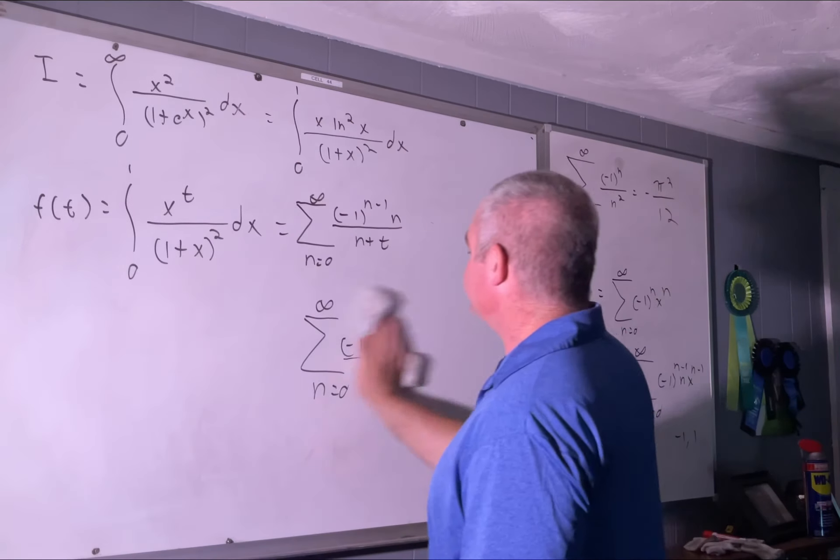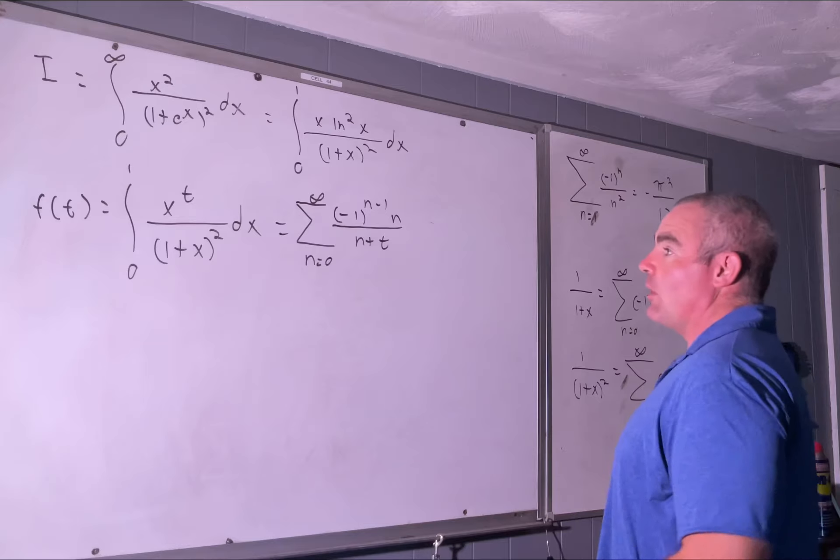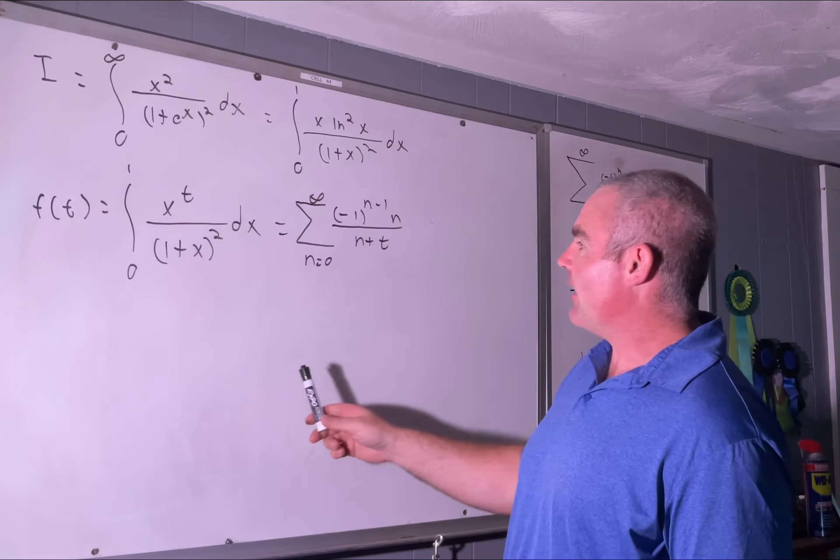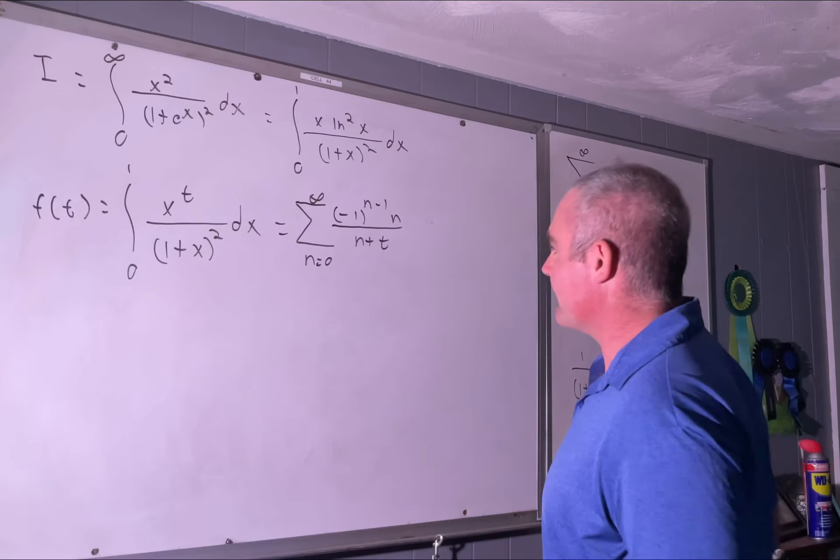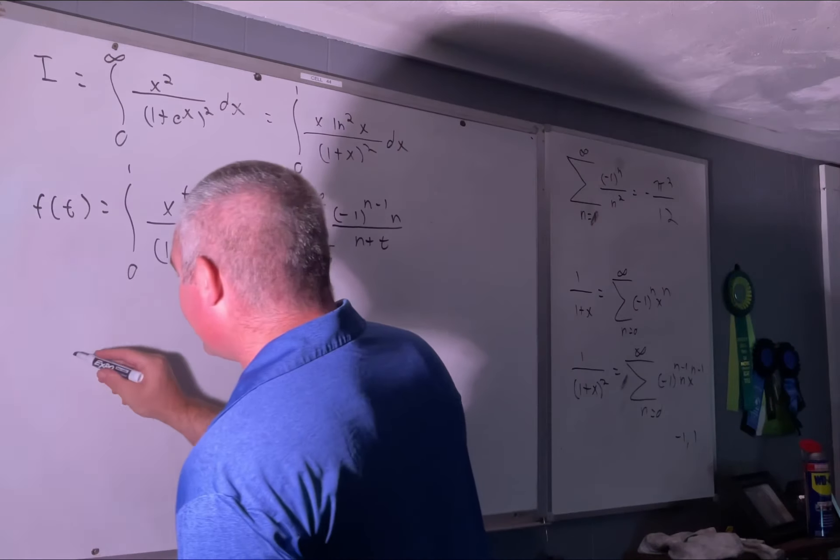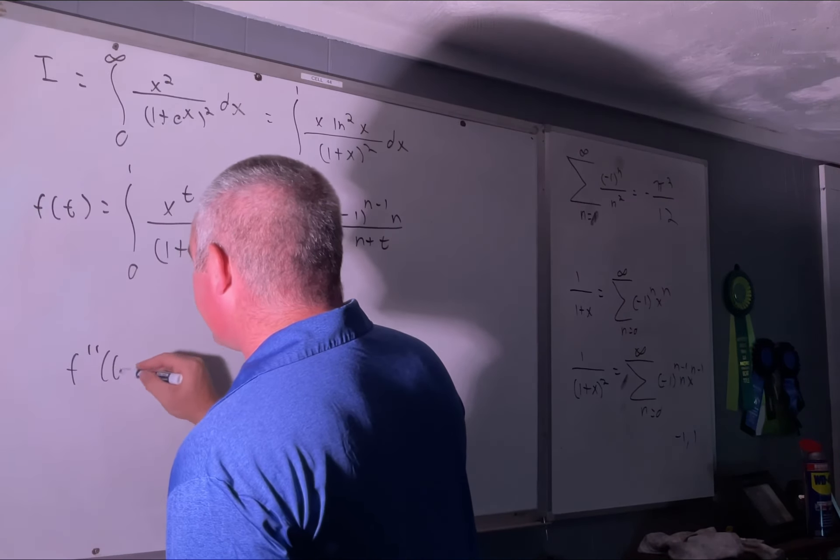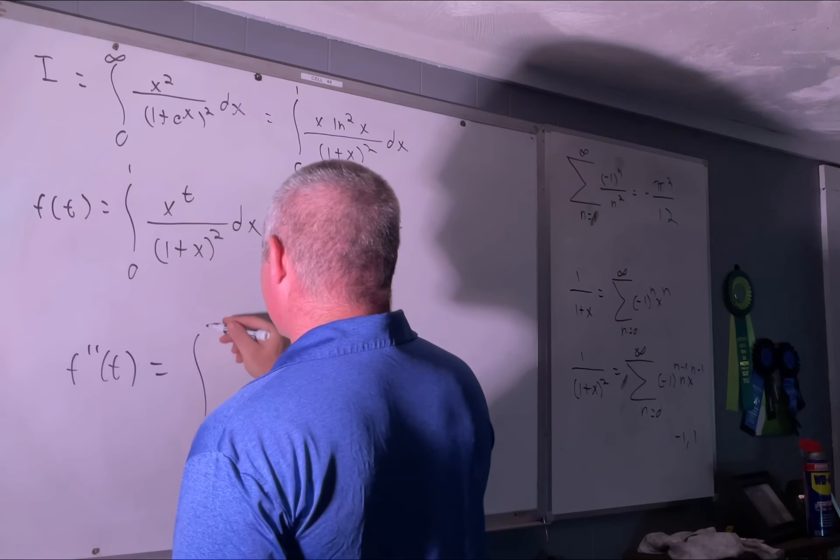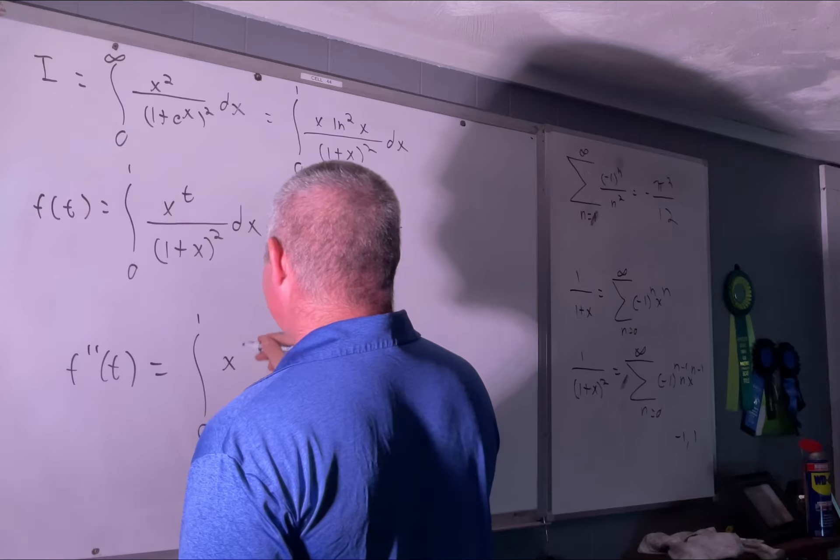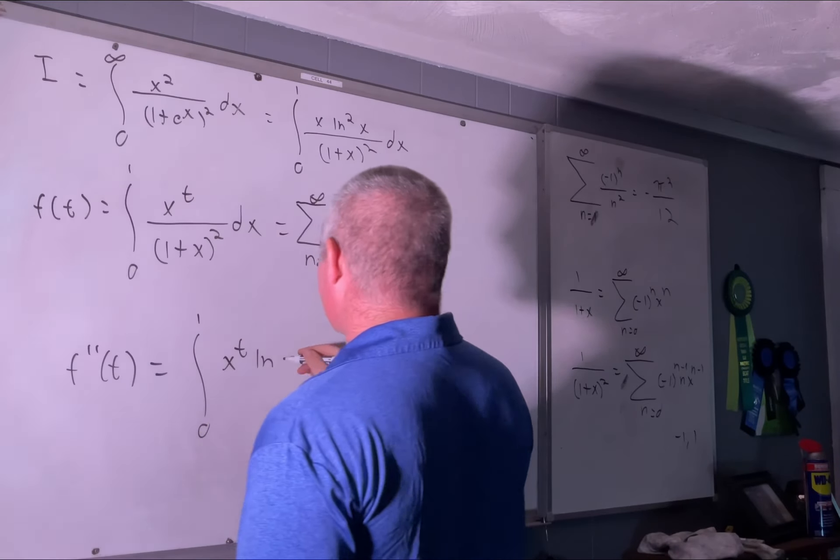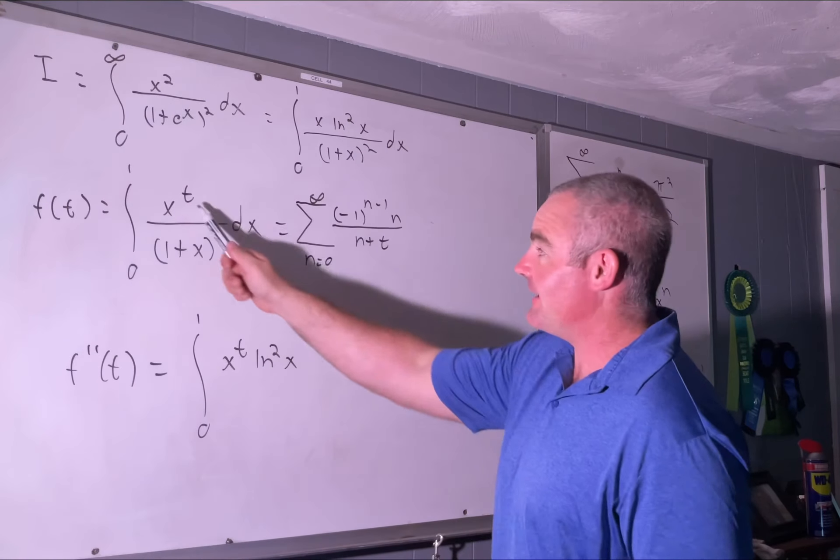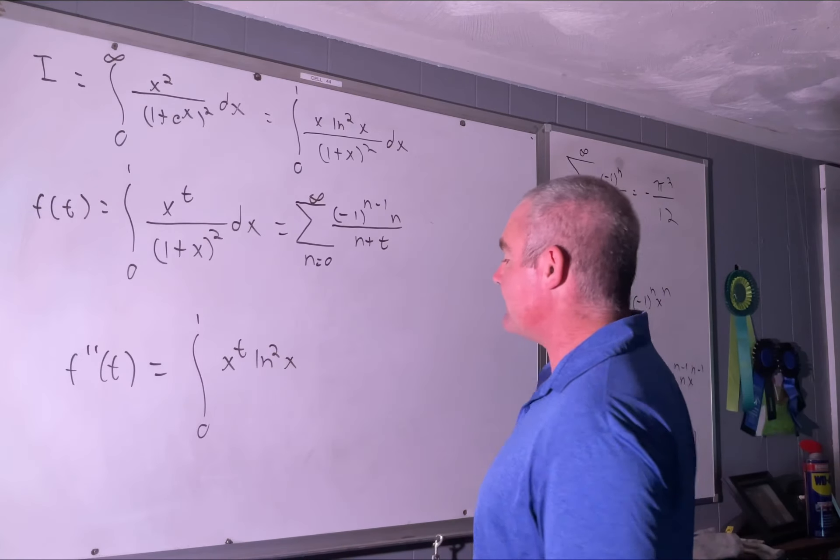Now what we're going to do is take two derivatives with respect to t on all three parts of this equation. That gives us f''(t). That's going to equal the integral from 0 to 1 of x^t times ln²(x) over (1+x²) dx, because we recover two factors of ln(x) by taking two derivatives with respect to t.